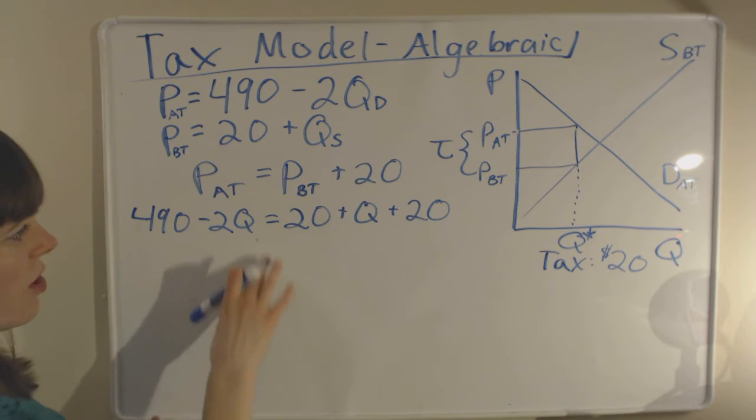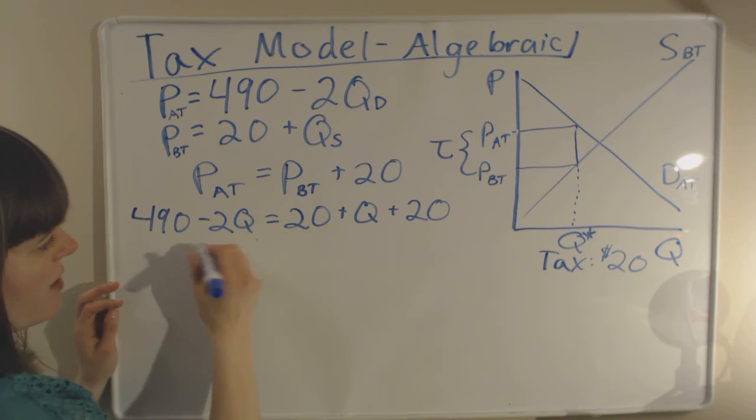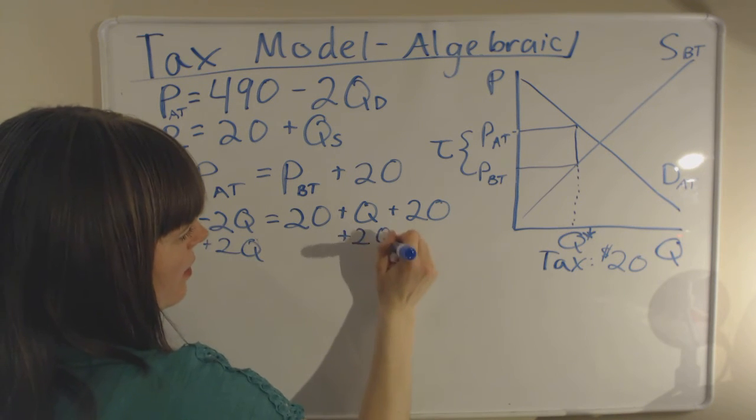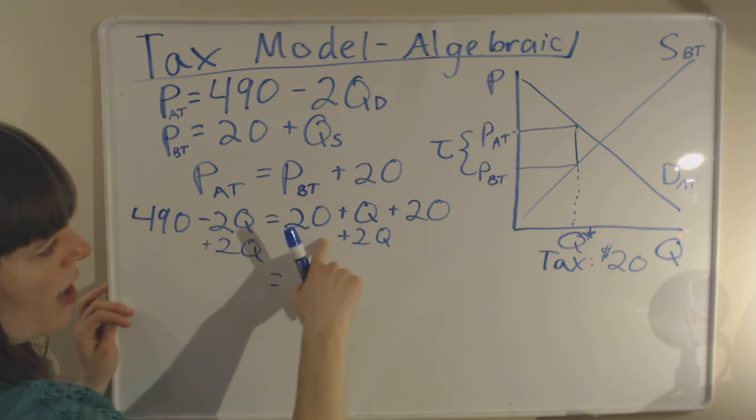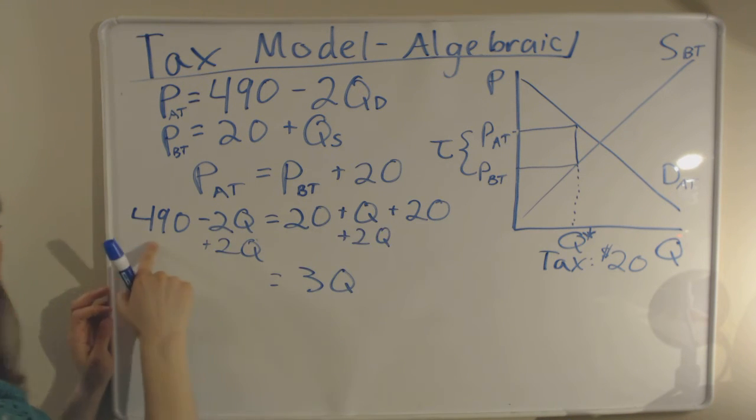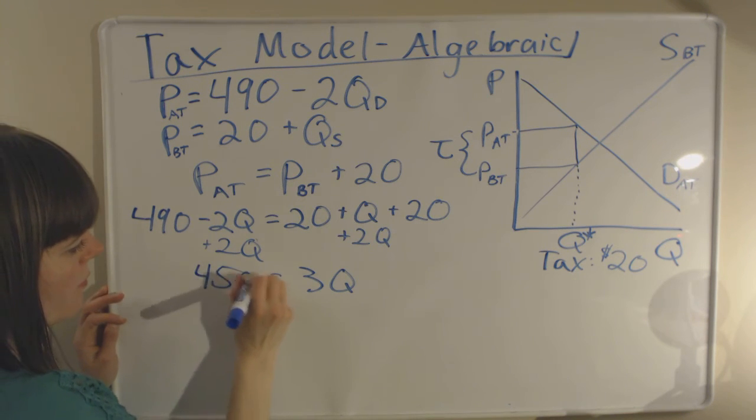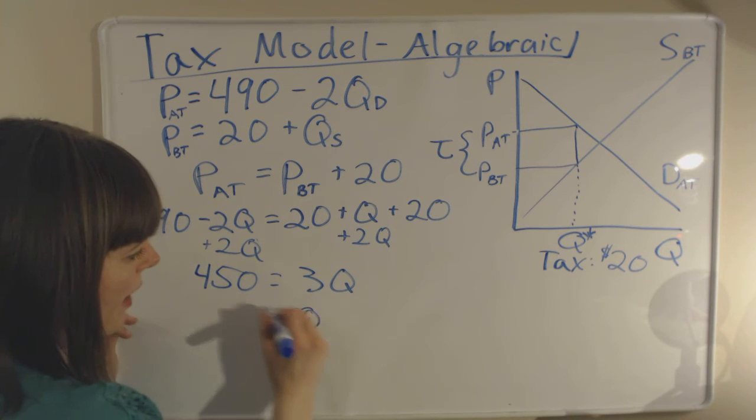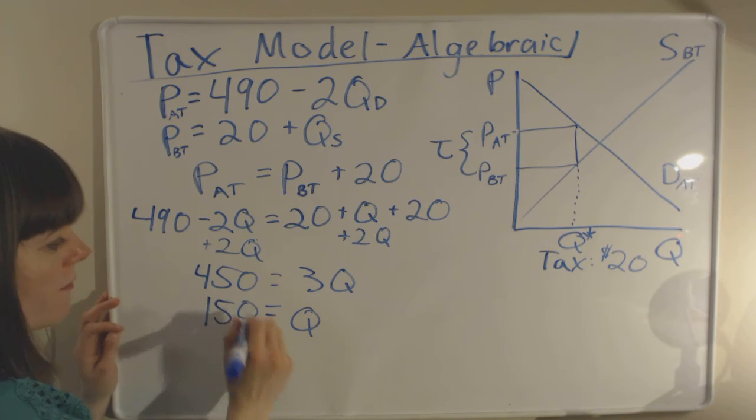And now we can just solve this for Q. So we can add 2Q to this side to bring the Qs over here, so we'll have 3Q on this side. And we'll subtract 20 and subtract another 20, so we're going to subtract 40 from the 490, and that's going to give us 450. 450 equals 3Q, so let's divide by 3, and that gives us 150.